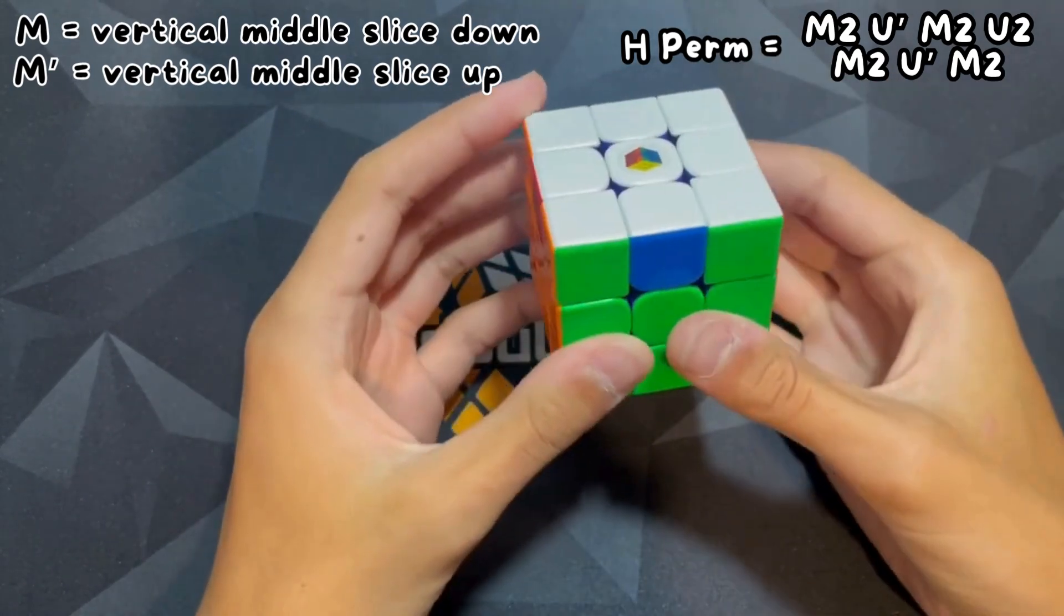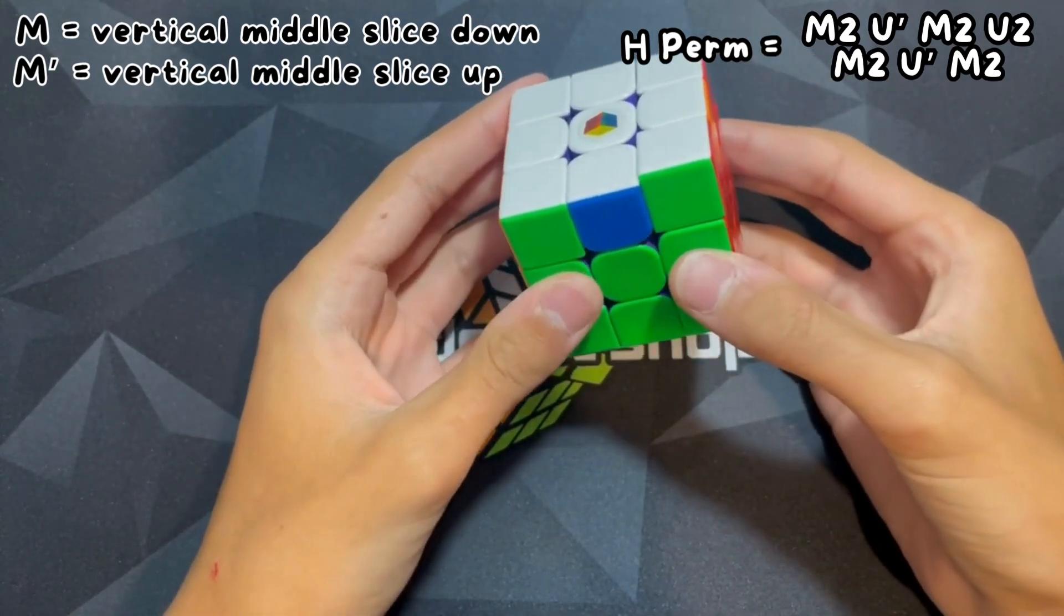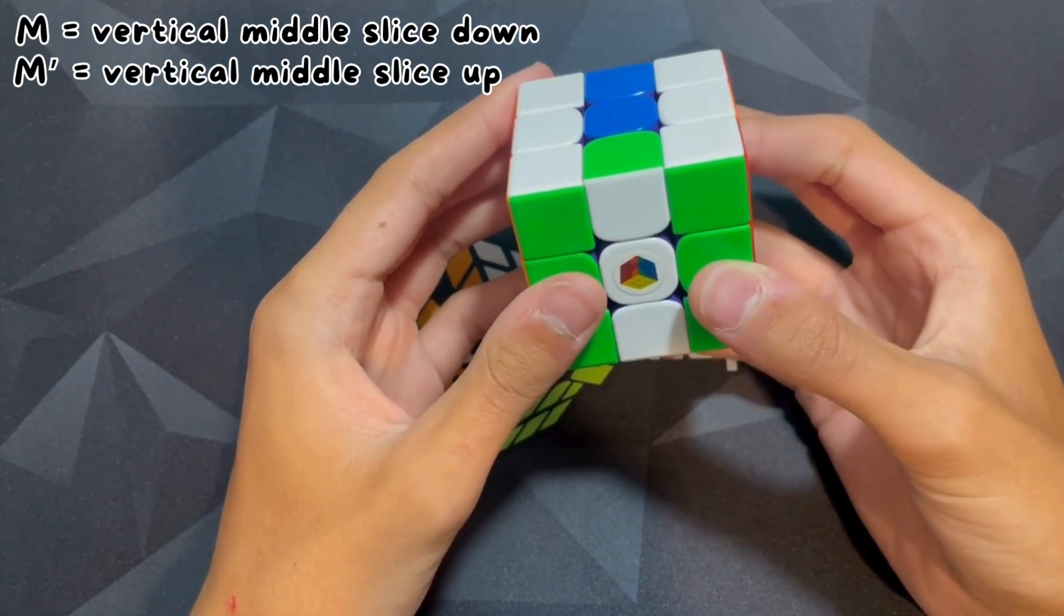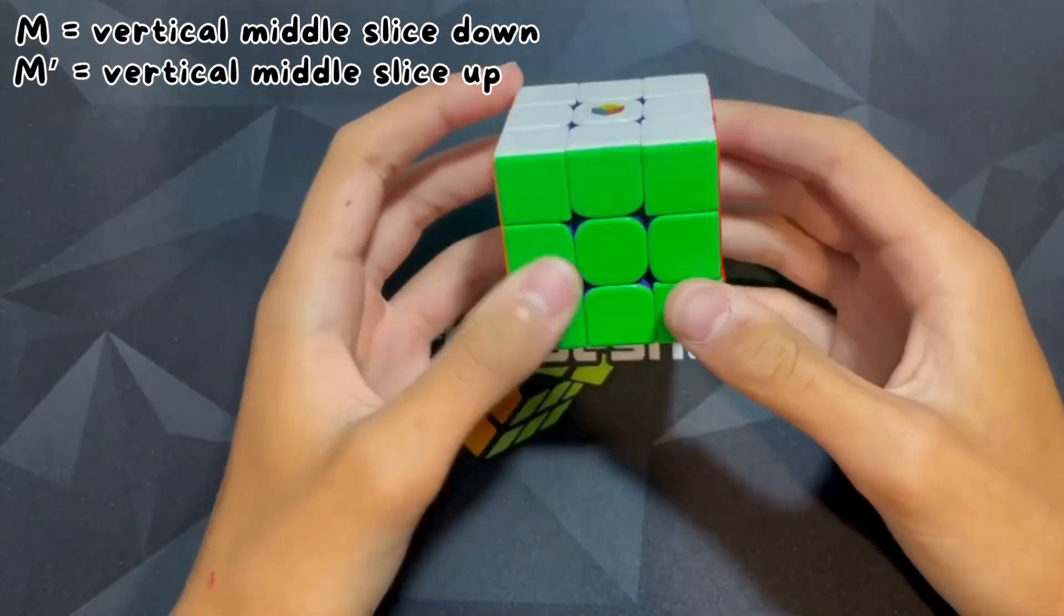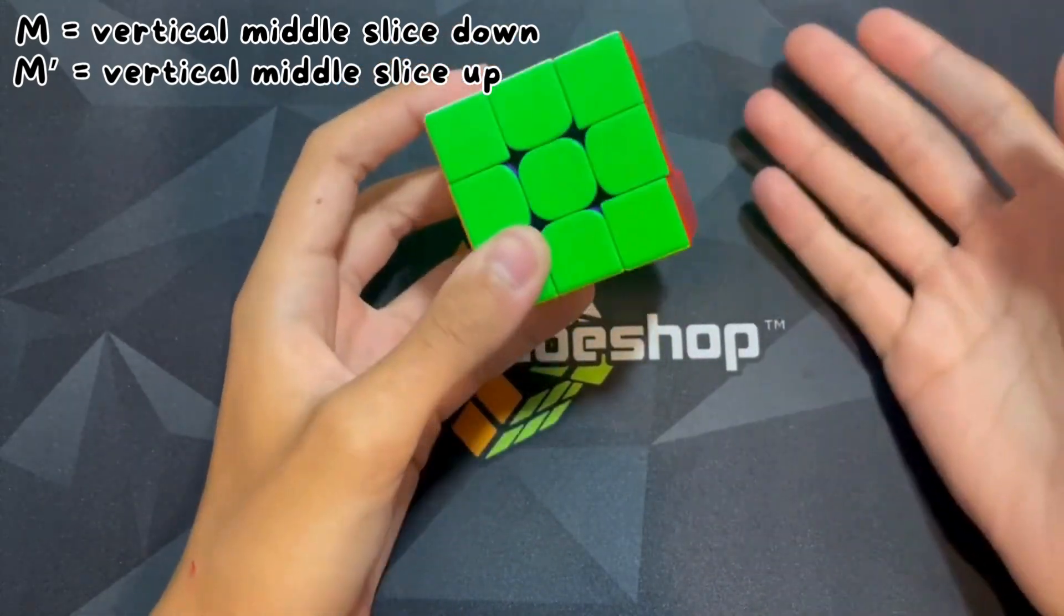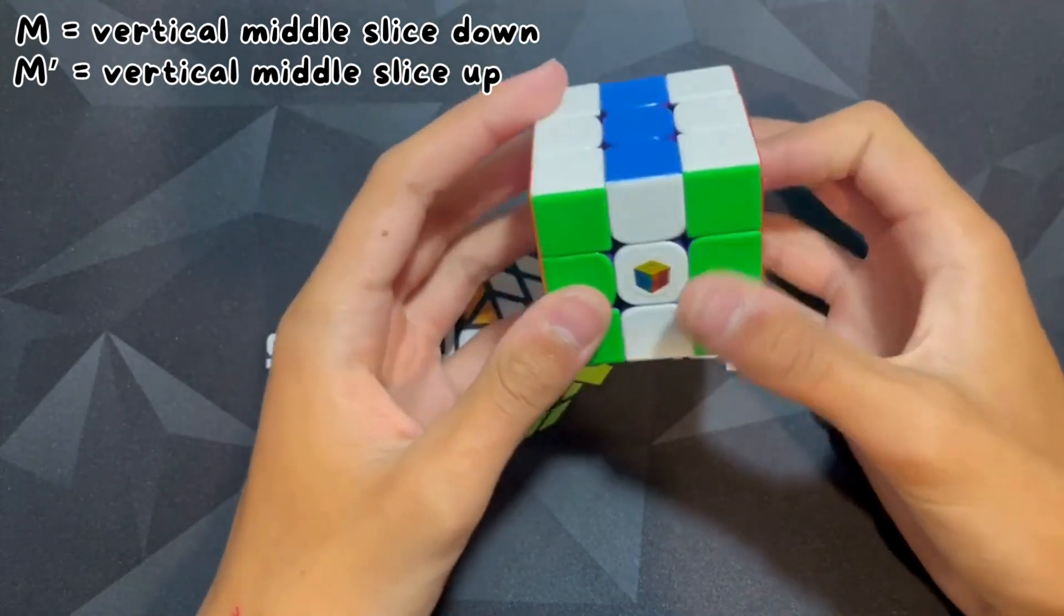M is where you turn the middle slice down. M prime is where you turn the middle slice back up. Most algorithms have either M 2 or M prime, but occasionally you'll see a couple M's, like there's the U perms. Both have M and M prime moves and M 2 moves.